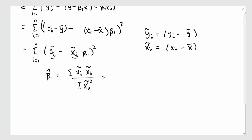Let's just plug in what yi tilde and xi tilde are. That's summation yi minus y bar times xi minus x bar divided by summation xi minus x bar squared.